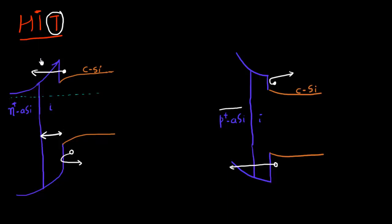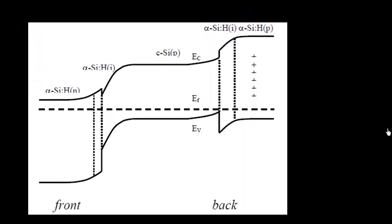To make a selective contact for collecting electrons, we place an N-plus amorphous silicon layer. To make a selective contact for holes, we place a P-plus amorphous silicon layer on top of the intrinsic amorphous silicon layer. Now let me show the band diagram of the final device. This is the band diagram for the cell, showing the intrinsic layer touching both the front side and the back side.